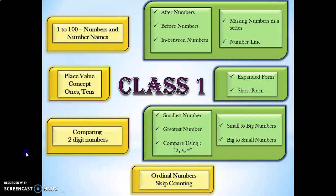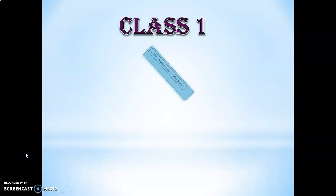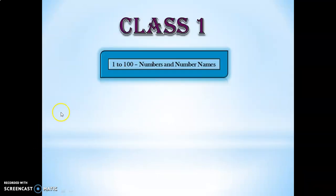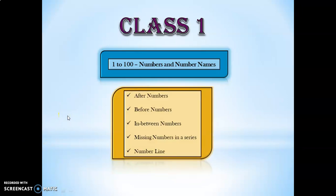What are the topics that we will be seeing under this concept of 1 to 100 numbers and number names? Here we will be testing the children on their ability to say and write numbers 1 to 100 and their number names in series. We will also test their ability to do after numbers, before numbers, between numbers, missing numbers in a series, and also the number line concepts.